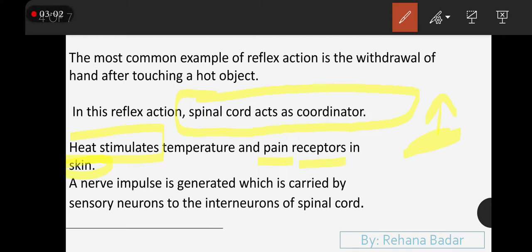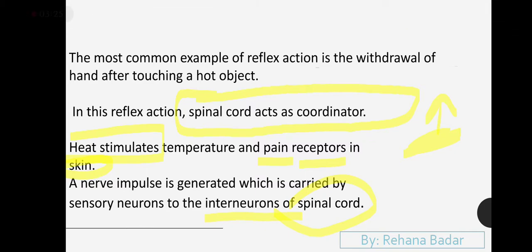A nerve impulse is generated which is carried by sensory neurons. Now, as you have to feel pain, a nerve impulse is created which was sensory. Sensory neurons sent it to interneurons. Interneurons in the spinal cord send signals back to the effector, your muscles and organs, which then produce the response.